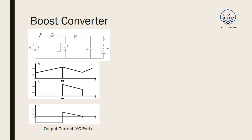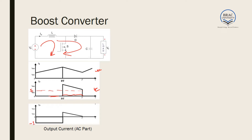Now, if we want to design for the boost converter, we again look at the output current. In the boost converter, the inductor current equals the input current when the switch is on, and equals the output current when the switch is off. So the output current follows the inductor only in the off-time region. The AC part is the total current minus I_0, giving minus I_0 during the on-time. In one portion charge is stored and in the other it is discharged.